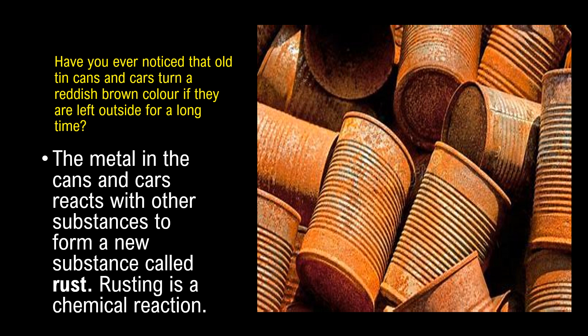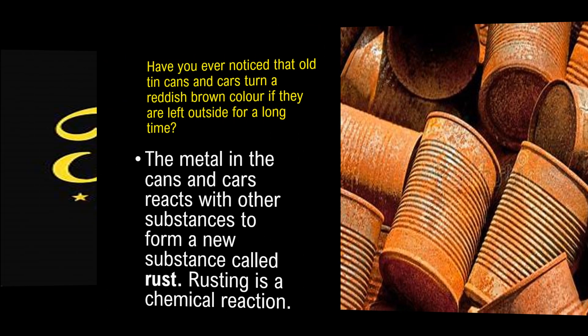Have you ever noticed that old tin cans and cars turn a reddish-brown color when they are left outside for a long time? The metal in the cans and cars reacts with other substances to form a new substance called rust. Rusting is a chemical reaction.